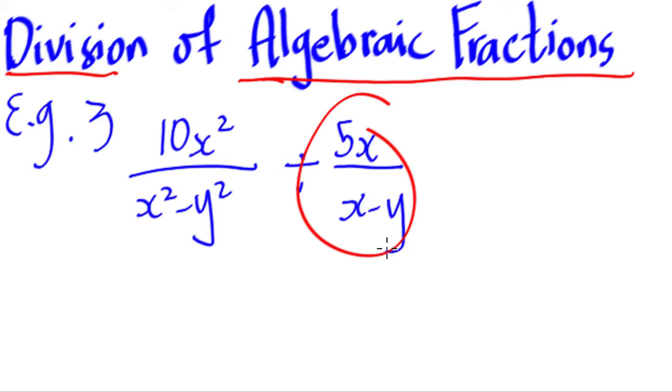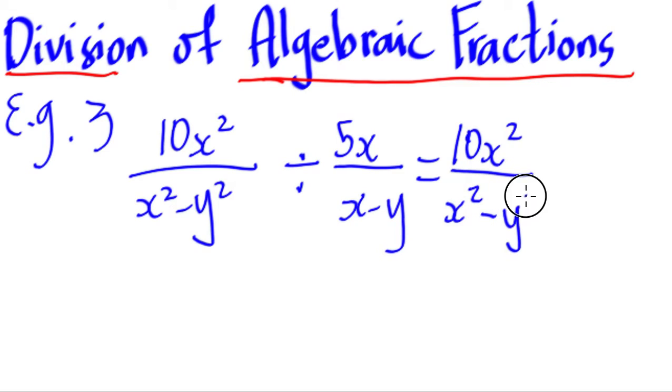we're going to get the reciprocal of this divisor here and we write it as this. So we're going to write the dividend as it is first. So what we have is 10x squared all over x squared minus y squared times x minus y all over 5x.